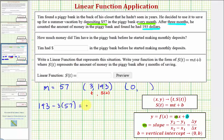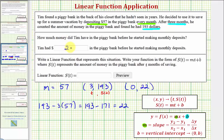So this gives us 193 minus 171, which equals 22. That means when time T equals zero, the savings amount was $22 — so Tim had $22 in the piggy bank before he started making monthly deposits.